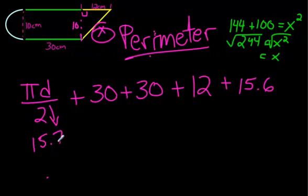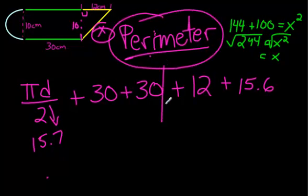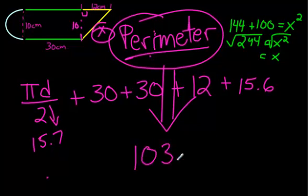Now, let's add all that up. 15.7. I'm going to say it out loud. Plus 30. Plus 30. Plus 12. Plus 15.6. Getting excited because we're almost done this question. And it is a bit long. And the perimeter, the perimeter is 103.3 centimeters. Notice I'm not writing a little squared there. No. That's for area. So, no. We'll get rid of that. This is the perimeter of our object.